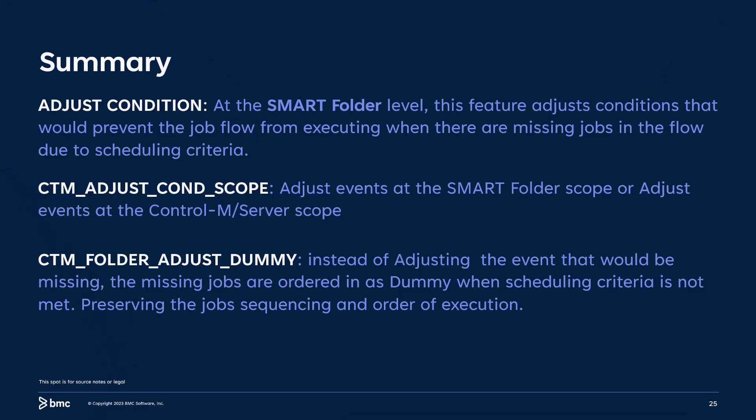In summary, the feature adjust condition at the smart folder level adjusts conditions that would prevent the job flow from executing when there are missing jobs in the flow due to scheduling criteria. The system parameter CTM adjust condition scope adjusts events at the smart folder level scope by deleting the conditions at the order time, or adjusts events at the Control-M server scope where the runtime criteria ignores the conditions that are not present. The system parameter CTM folder adjust dummy — instead of adjusting the event that would be missing — orders the missing jobs as dummy when the scheduling criteria is not met, thus preserving the job's sequencing and order of execution. CTM folder adjust dummy takes precedence over the scope; when adjust dummy is set to yes, the scope parameter is ignored.